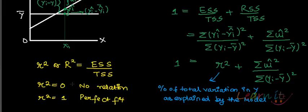If R square is near to 1, that means the model is explaining very clearly the variations in the dependent variable. When I say model, I mean all the independent variables that you have taken up in the model.